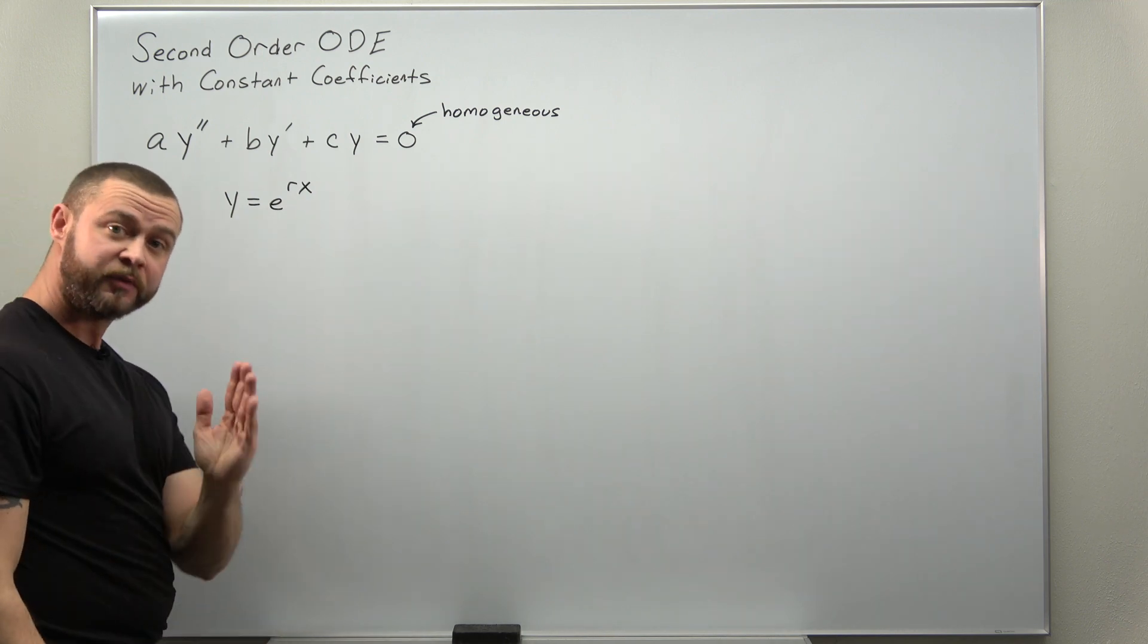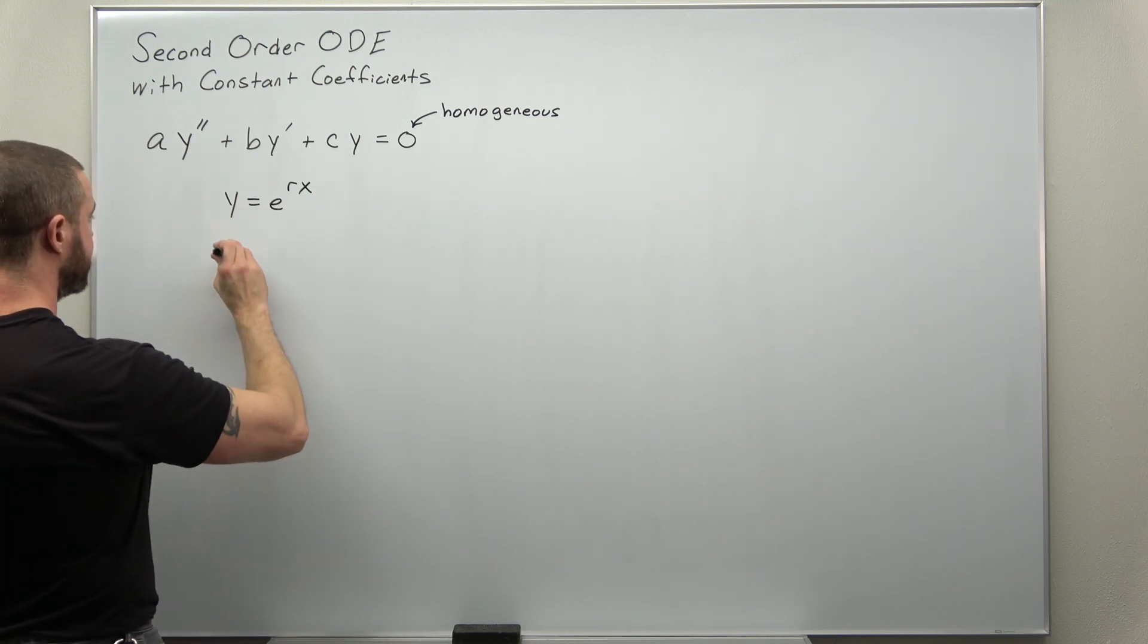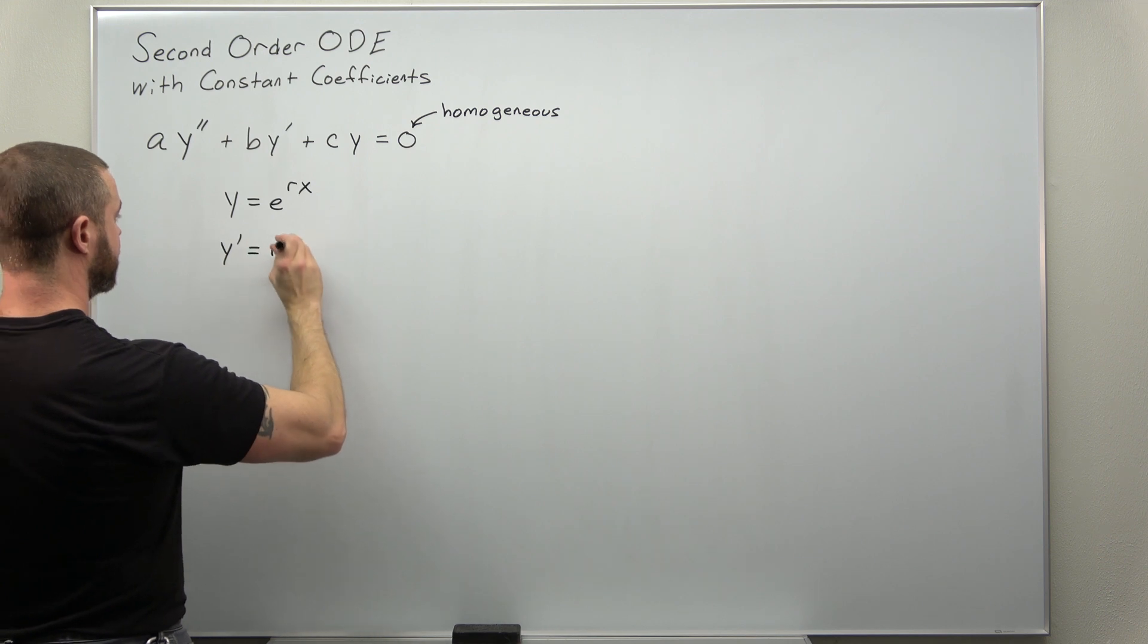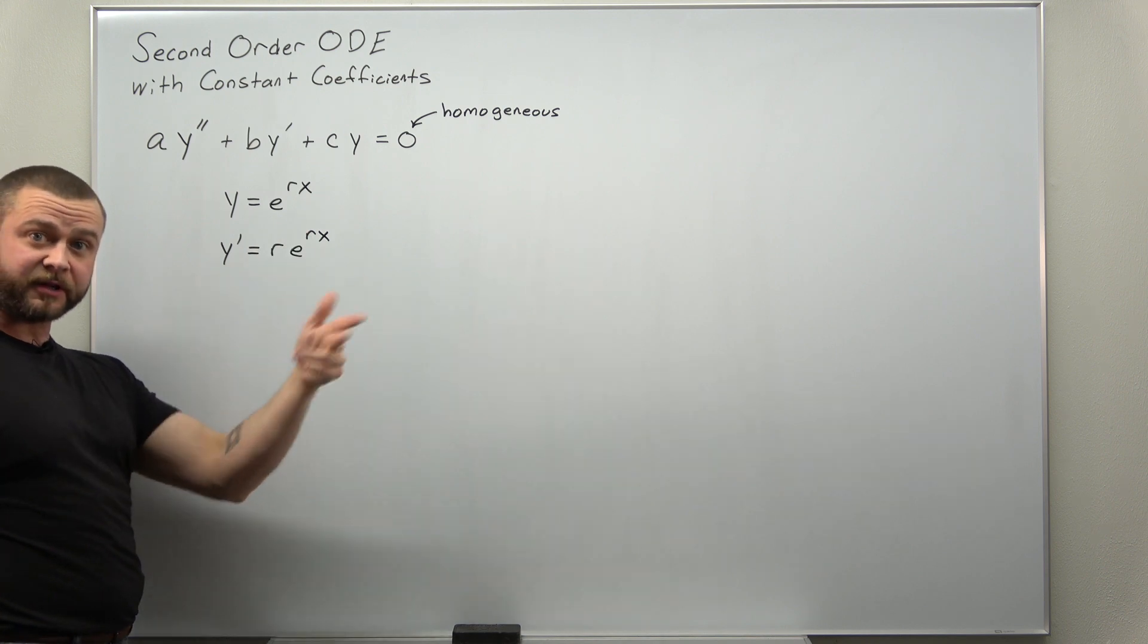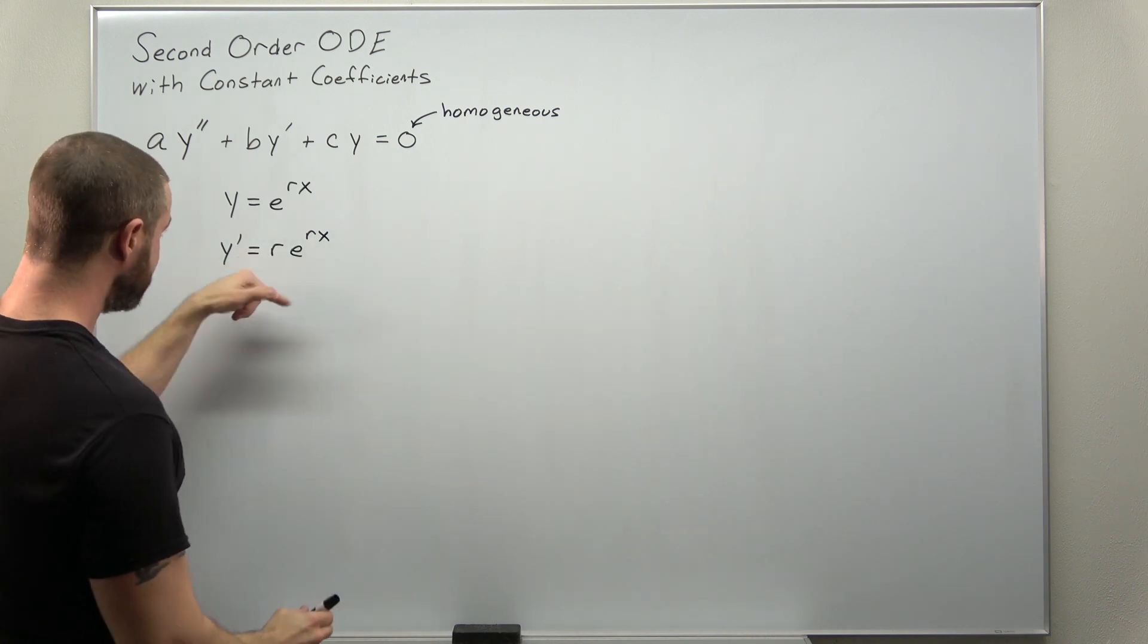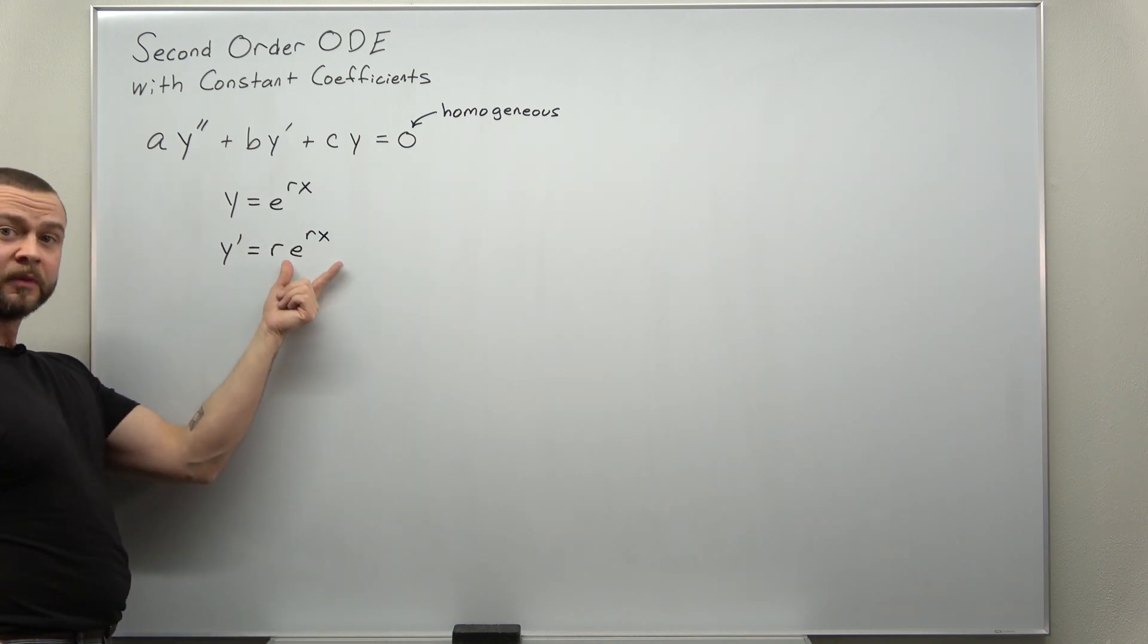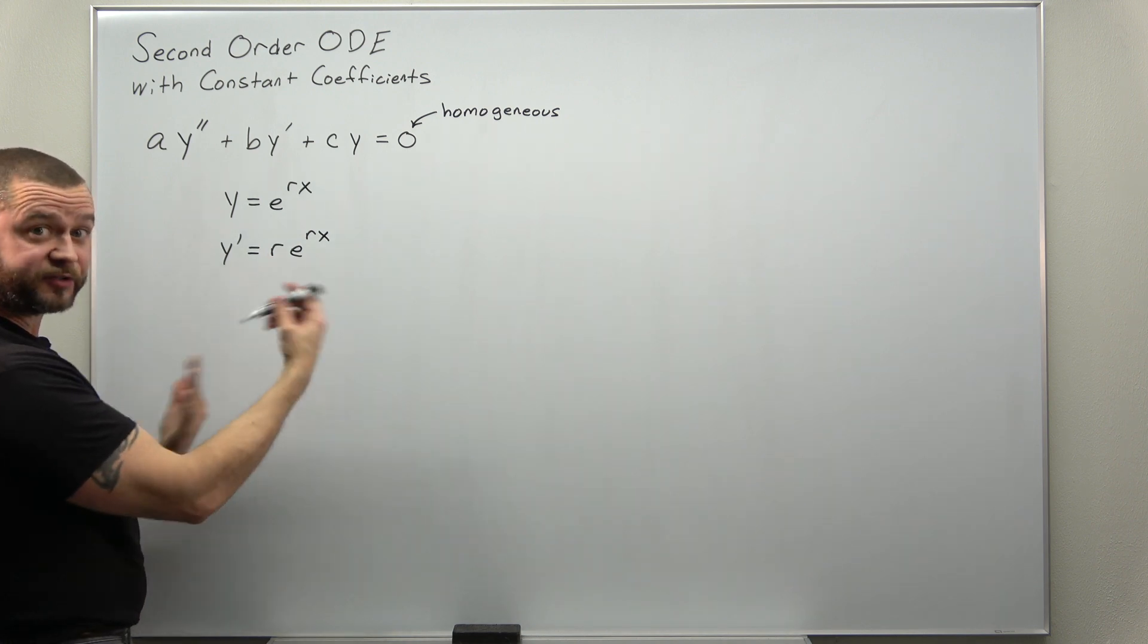So let's calculate the derivatives using the chain rule. Chain rule is going to give you a factor of r from differentiating e to the rx, and we differentiate this again we'll get another factor of r giving us r squared.